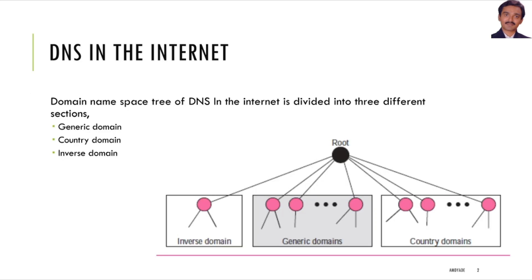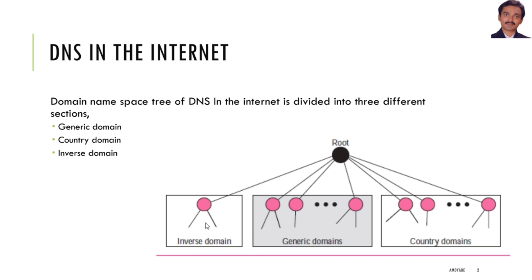The Domain Name Space Tree of DNS in the internet is divided into three different sections: Generic Domain, Country Domain, and Inverse Domain.